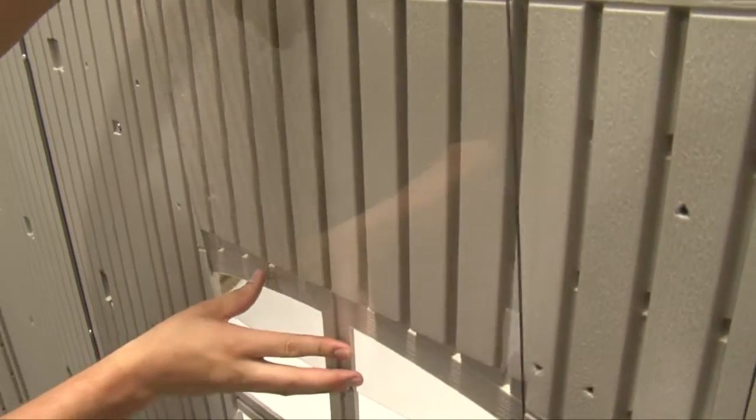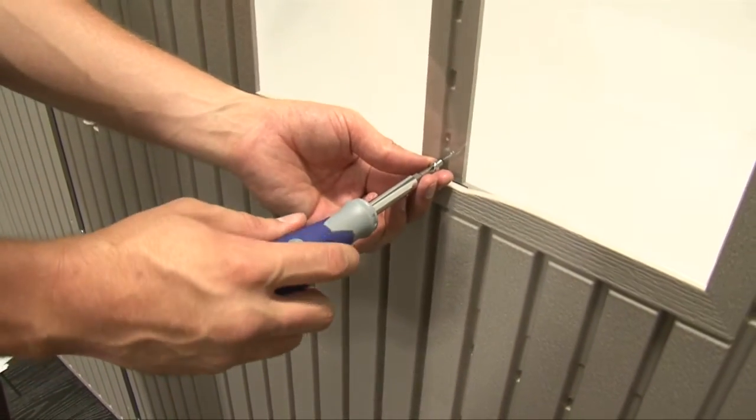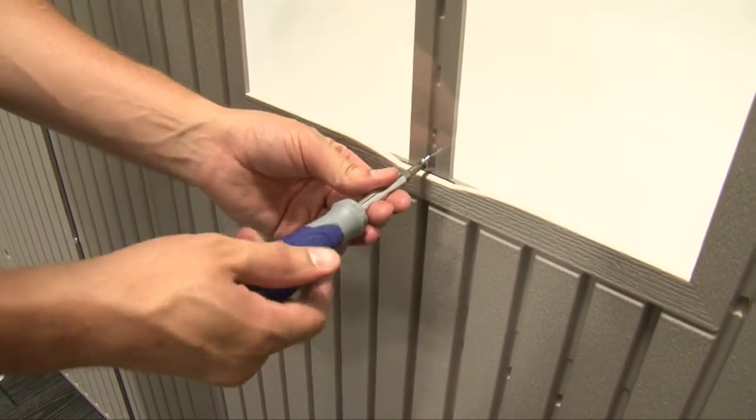Slide the window down into the window wall panel. Insert the small window stop screw into the hole at the bottom center of the window.